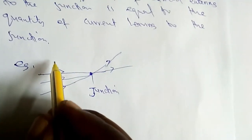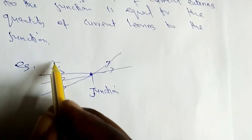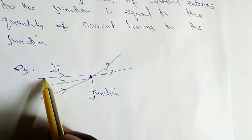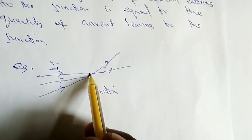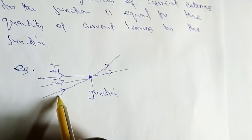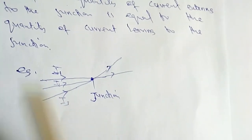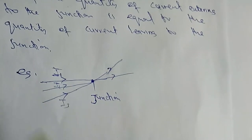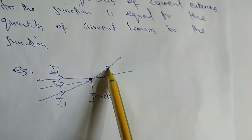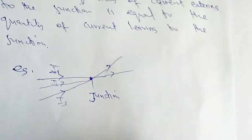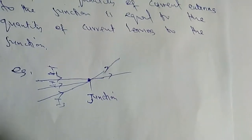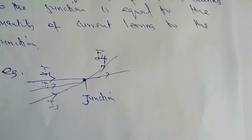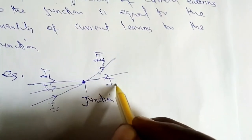For example, the quantity of current — let's say current 1, current 2, and current 3 — are all entering into the junction from their respective terminals. But when we look here, we see two terminals which indicate that current is leaving from the junction: this is current 4 and this is current 5.